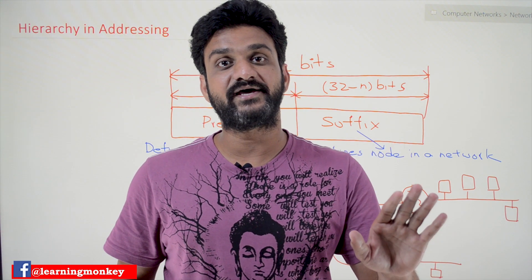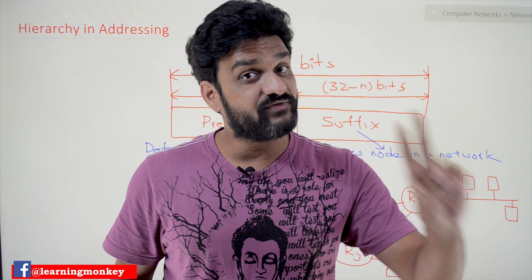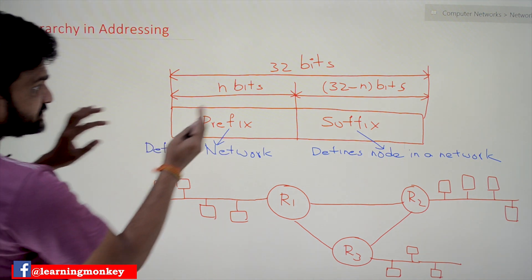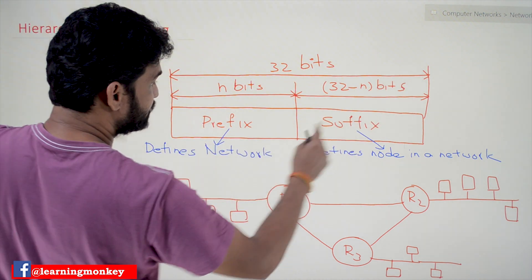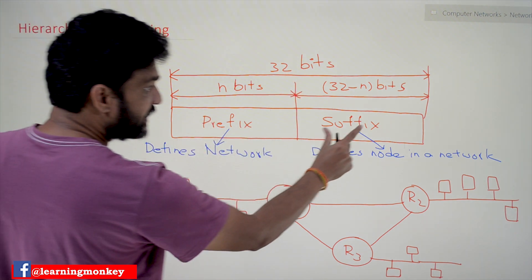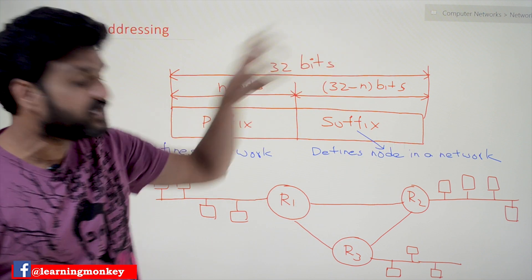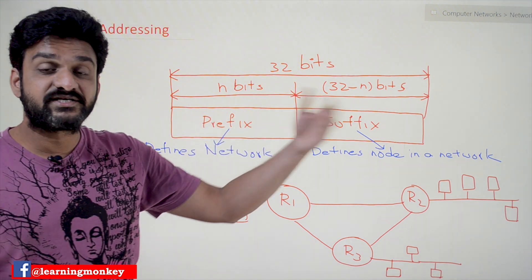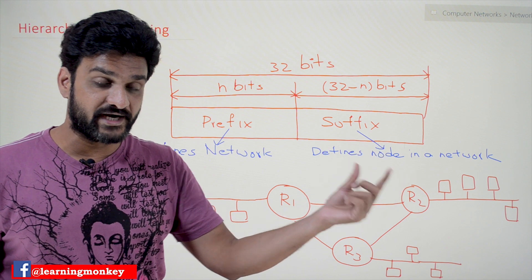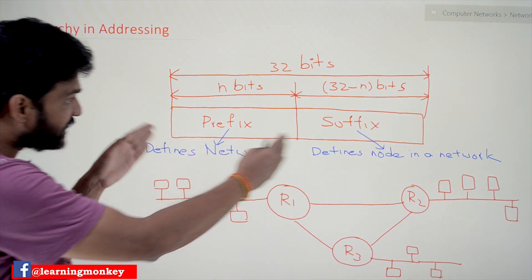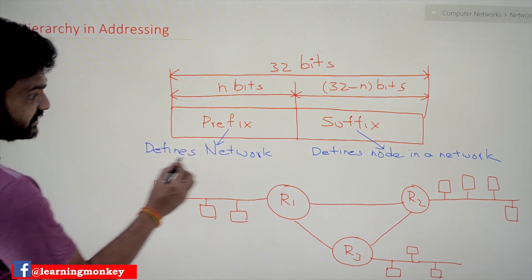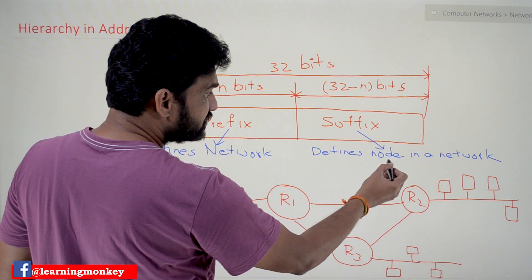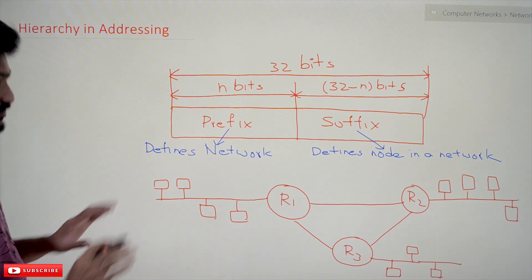In the same way, IP addresses are divided hierarchically. The entire 32 bits are divided into two parts. The most significant part is called the prefix, and the remaining part is called the suffix. Just as a telephone number is divided into country code and exchange code, the prefix part of the IP address defines the network, whereas the suffix part defines a node within that network.